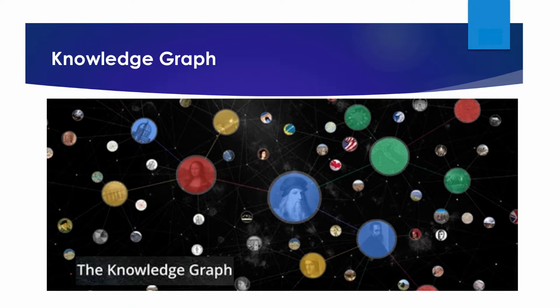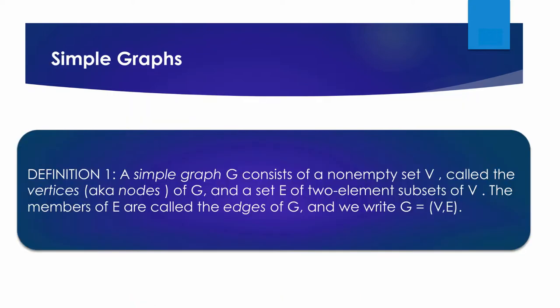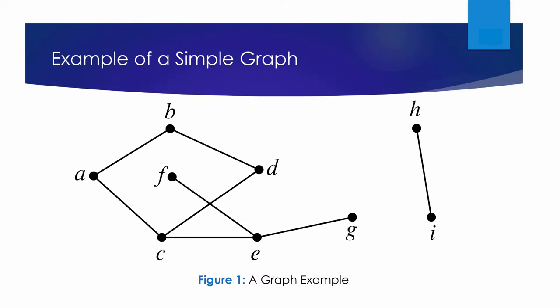The first definition is about simple graphs. A simple graph G consists of a non-empty set V called the vertices (the nodes of G), and a set E (the edges), which contains two-element subsets of V. The members of E are called the edges of G, and we write G as the combination of V and E. The vertices correspond to the dots in the figure and the edges correspond to the lines.